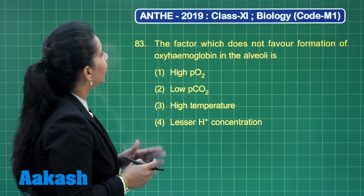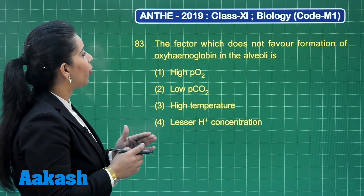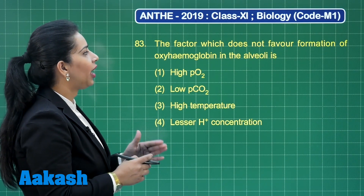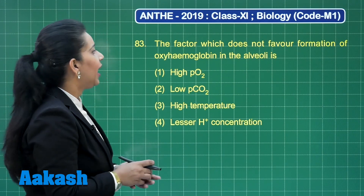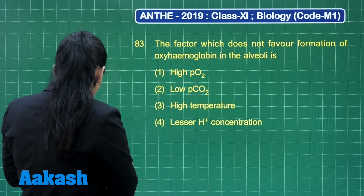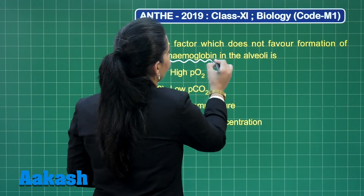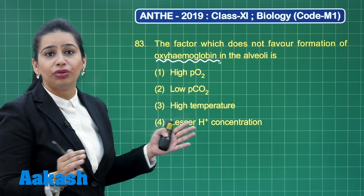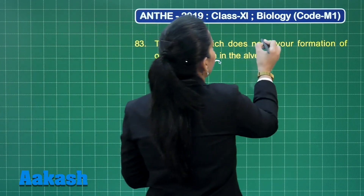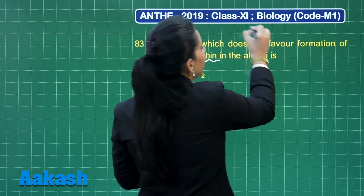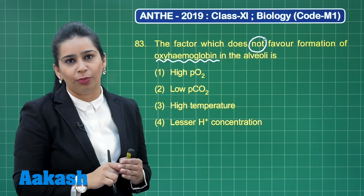This question asks us the factor which does not favor formation of oxyhemoglobin in the alveoli. It is a question from the topic transport of gases, and here we are talking about oxyhemoglobin — specifically the transport of oxygen — and we need to find the factor which does not favor the formation of oxyhemoglobin.